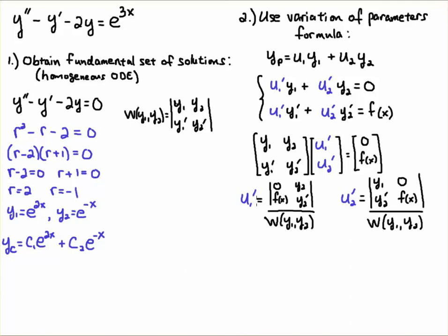For u1 prime, I replace the first column with the right-hand side and leave the second column — y2 and y2 prime — alone. Likewise for u2 prime, I replace the second column with the right-hand side and leave the first column alone. Taking the determinant at the top gives 0 minus y2·f(x), divided by the Wronskian — the minus sign comes from the numerator determinant. For u2 prime, I take y1·f(x) divided by the Wronskian.